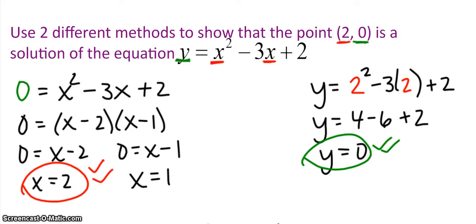I've got two methods shown on the screen right now. I tried to do a little bit of color coding for you. So I highlighted that this x value, this is a point (x, y). This 2 represents our x value in red, and this 0 represents our y value in green. So here's a y, here's an x, here's an x.